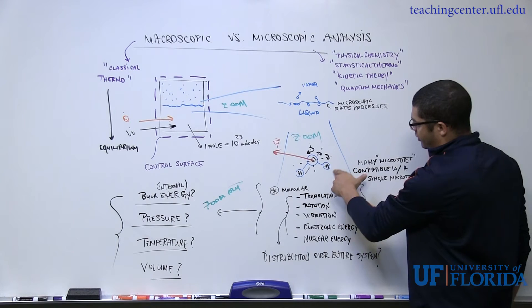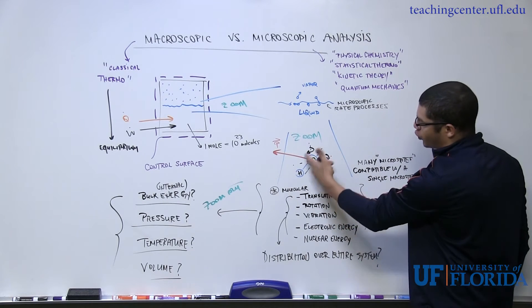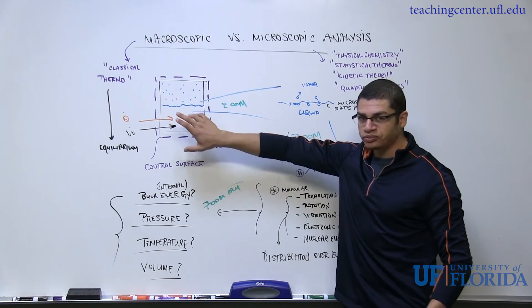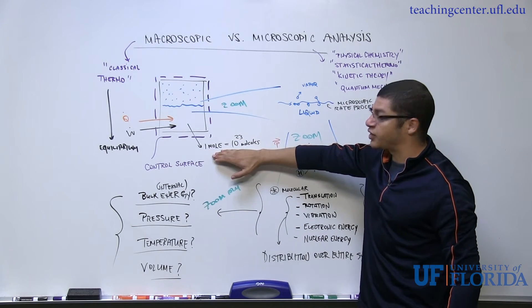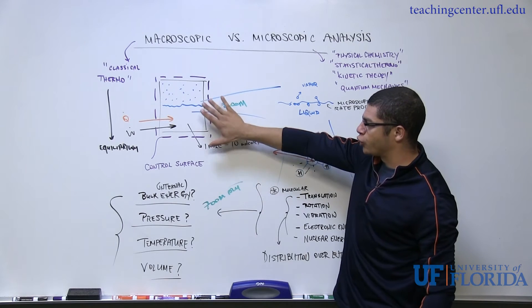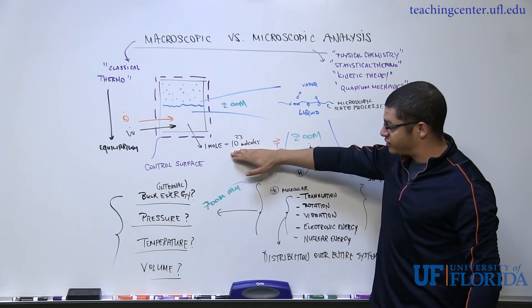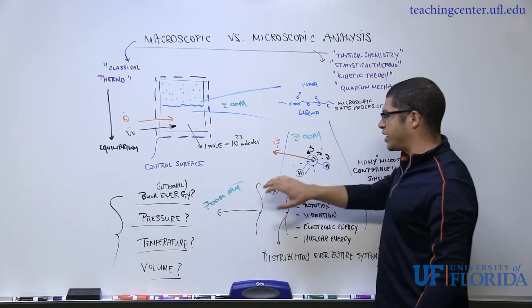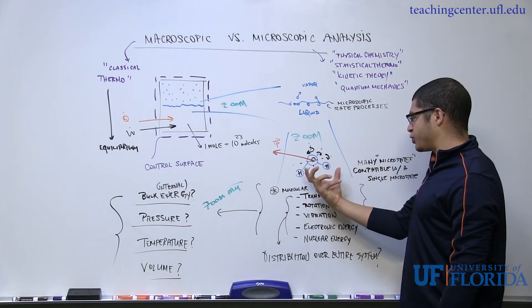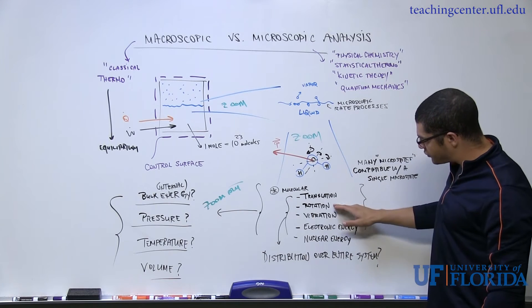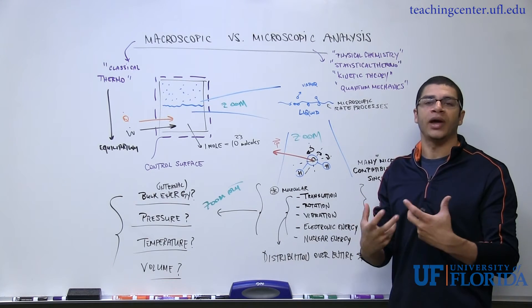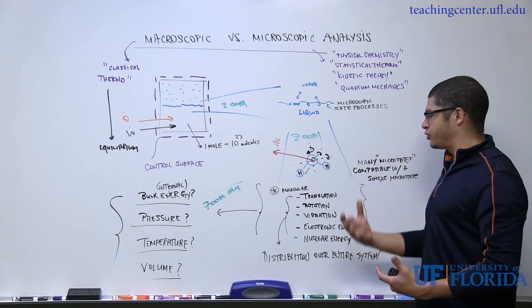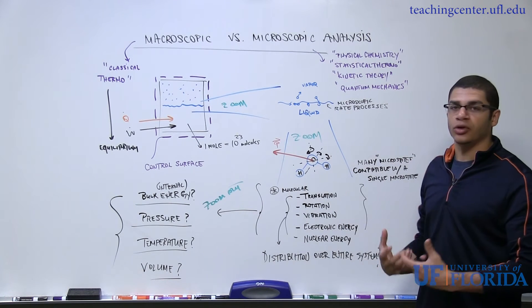There's a very complex interaction between each of these energy storage modes for each molecule in this entire system. If we have one mole of water in this particular example, that's 10 to the 23rd power molecules. Each molecule has a different distribution of these energy storage modes, and they're all interacting with each other.